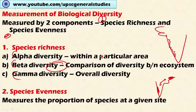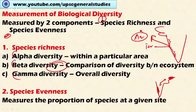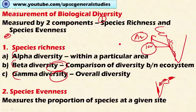The third is gamma diversity, which is the measure of the overall diversity for different ecosystems within a region. For instance, in the Western Ghats there are different ecosystems — aquatic, terrestrial — and if you measure the overall diversity for all ecosystems within that particular place, that is called gamma diversity. So beta diversity refers to between different regions, while gamma diversity refers to within a particular region but between different ecosystems.